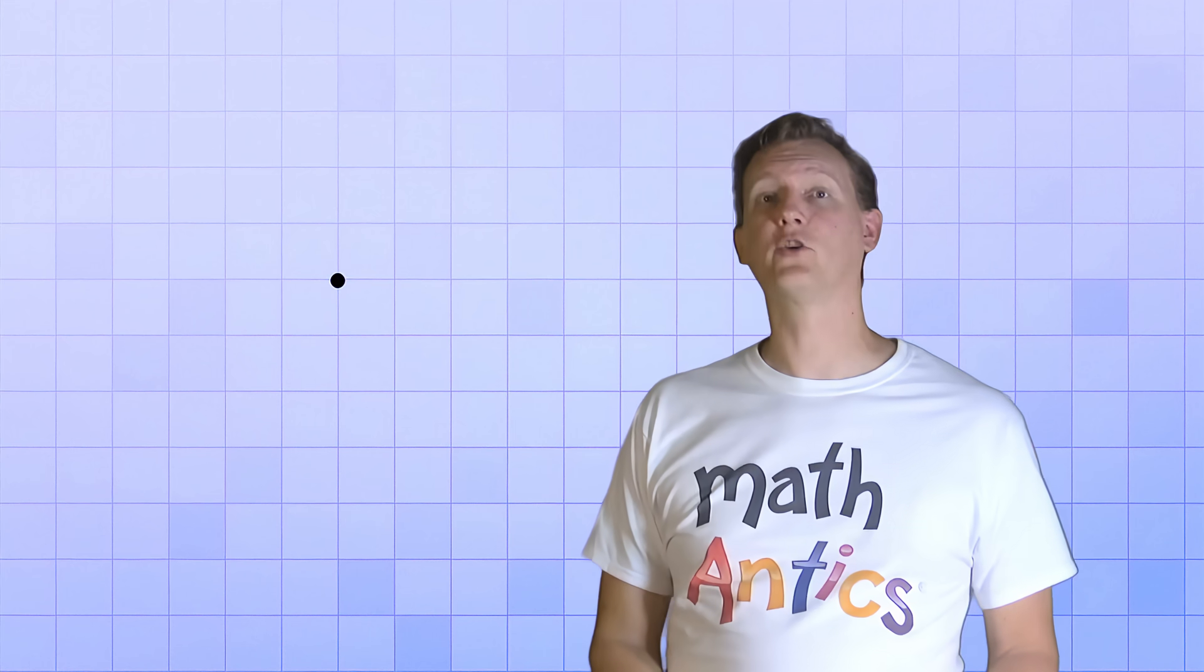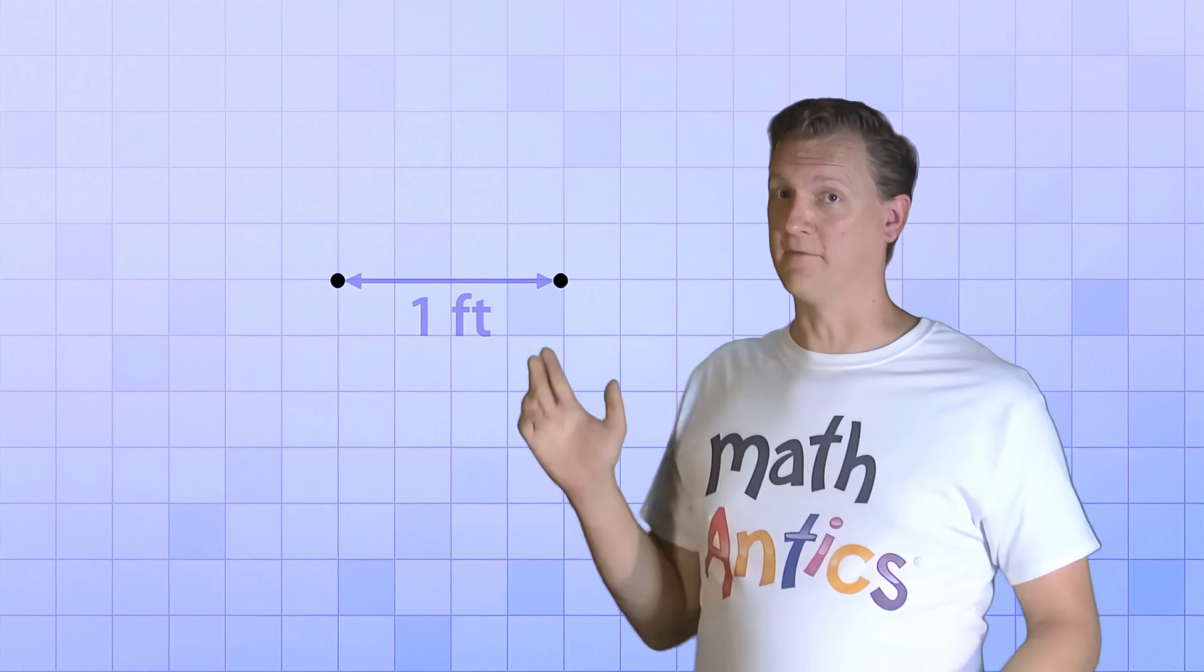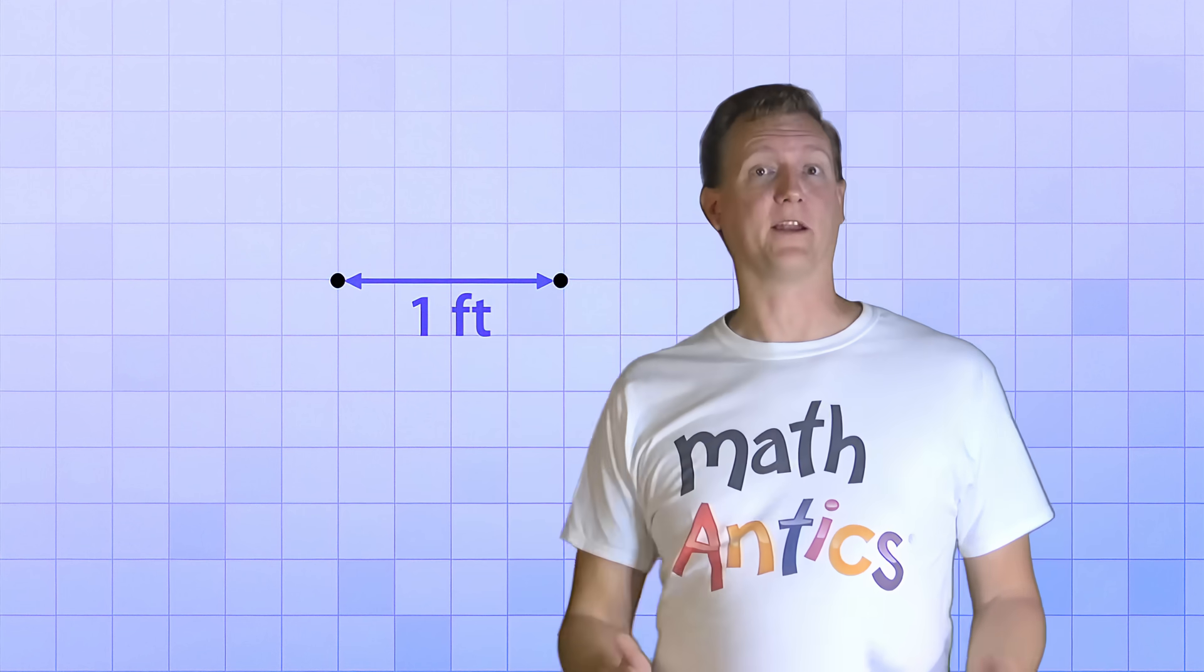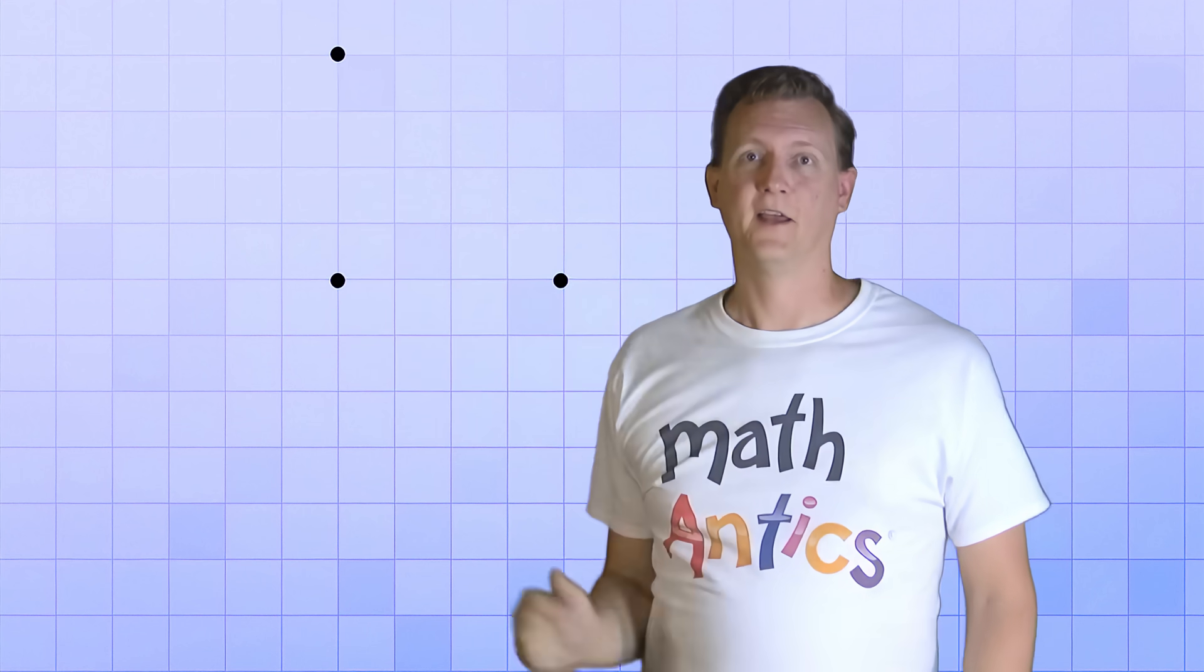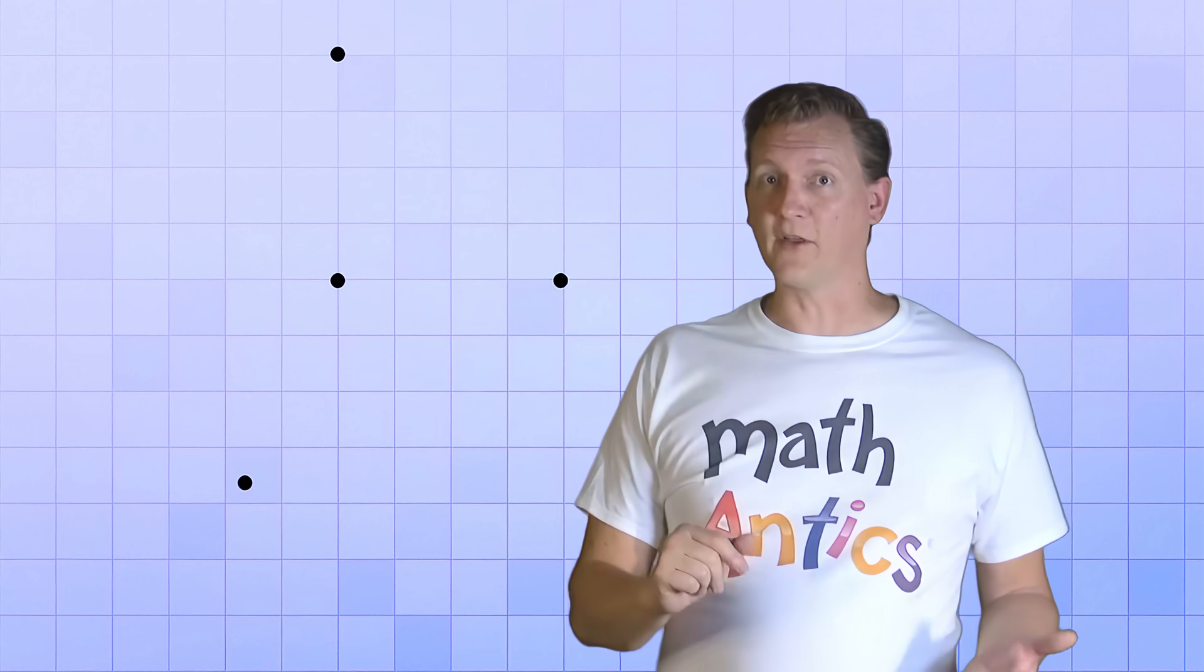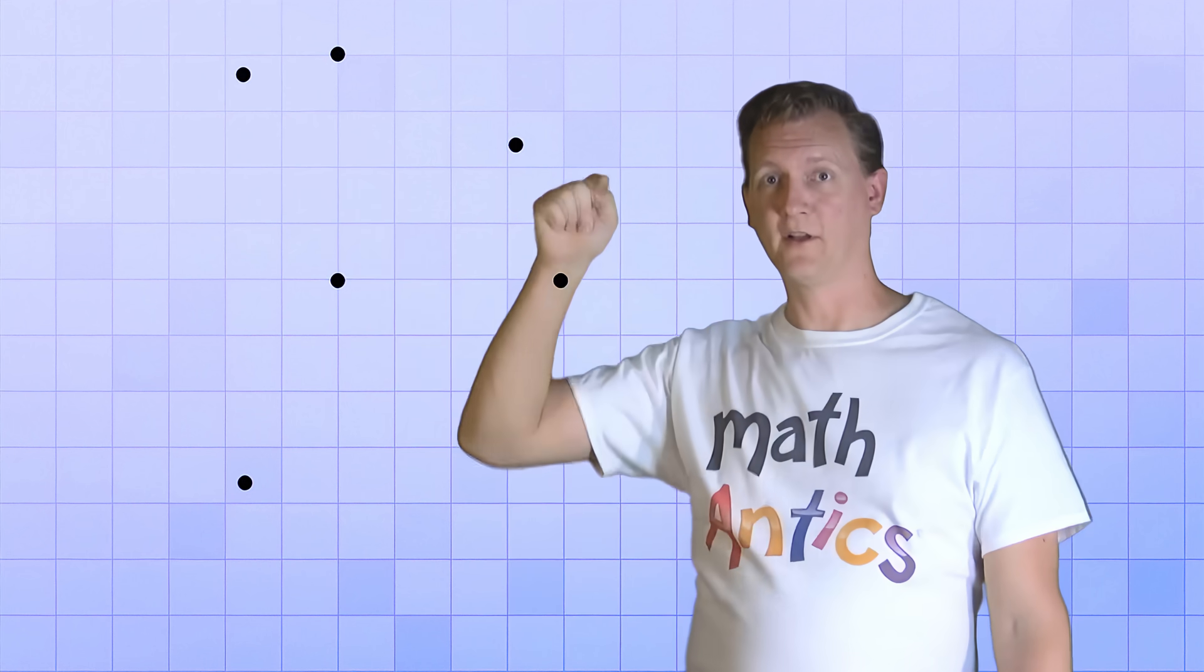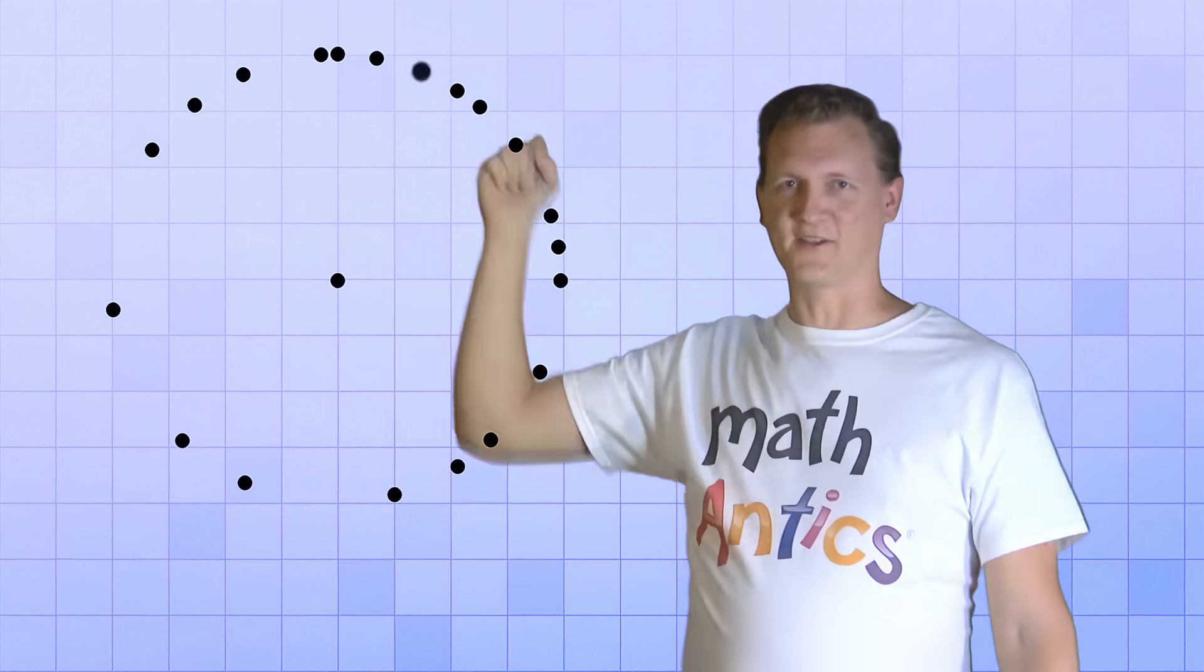So, here's a single point to start with. And now, let's start drawing points that are equidistant from it. This point is a foot away to the right. Now let's make another point a foot away, but in another direction, let's say up here. Now let's make another one also a foot away, but in another direction, right here. Now let's make another one, another one, another one, and another one!